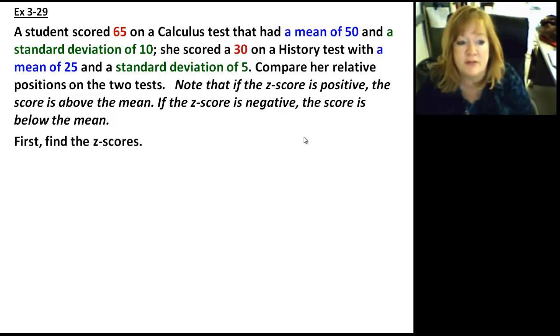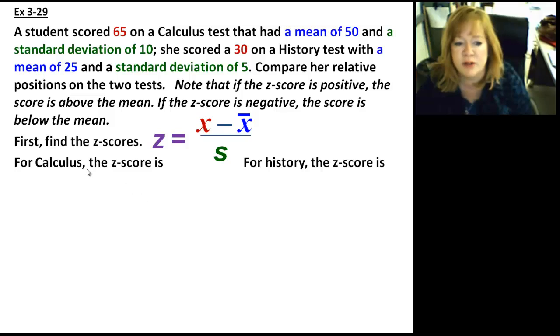All right, so let's start off. We need to find the z-score. So here's our formula. Z equals the x, and notice I color-coded them. The data values are in red, the means are in blue, and the standard deviation I have in green. So all I have to do is plug those numbers in for each of these classes. So for the calculus, the z-score is going to be 65, that's what she scored, minus the mean of 50 divided by the standard deviation of 10.